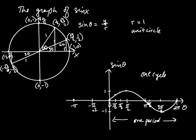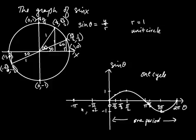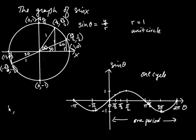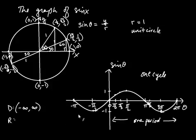We can also go the other direction — angles can be negative. Going from 0 to negative pi over 2, sine is going to be negative because the y-coordinate is negative. The y-coordinate hits its most negative value of −1 at negative pi over 2, then rises back up to 0. From this graph, the domain — what you can plug in — is negative infinity to infinity. You can plug in any angle. The range, however, is just from −1 to positive 1, since the outputs never go below −1 or above 1.